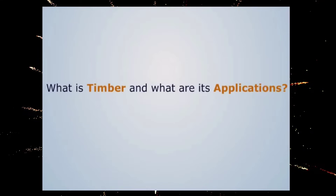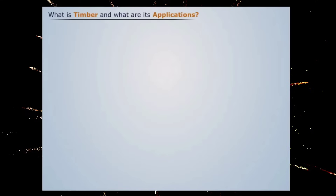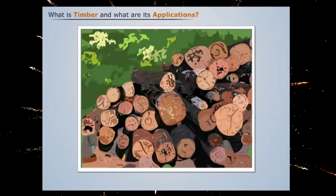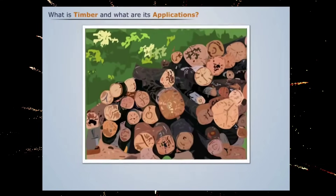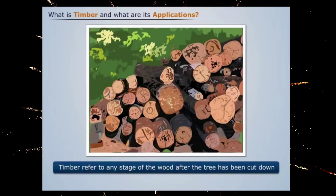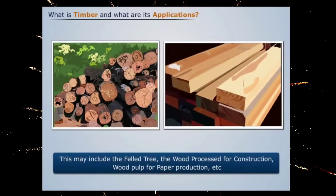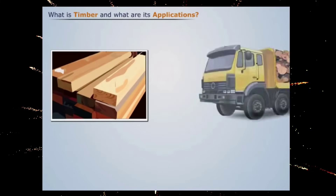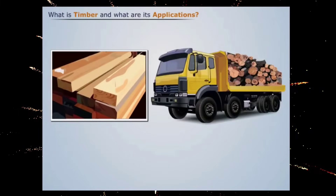Timber is a natural form of wood which is used as a building material. Timber refers to any stage of the wood after the tree has been cut down. This may include the felled tree, the wood processed for construction, wood pulp for paper production, etc. It is easily available, easy to transport and handle.